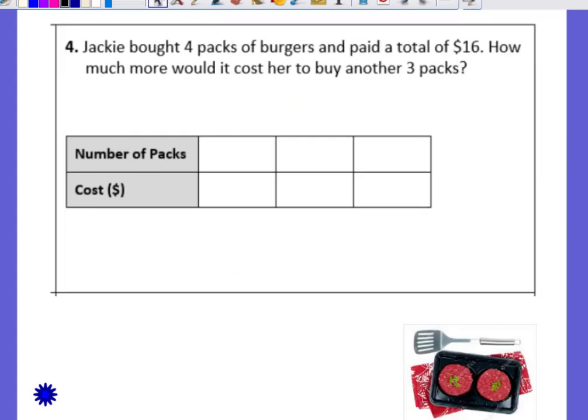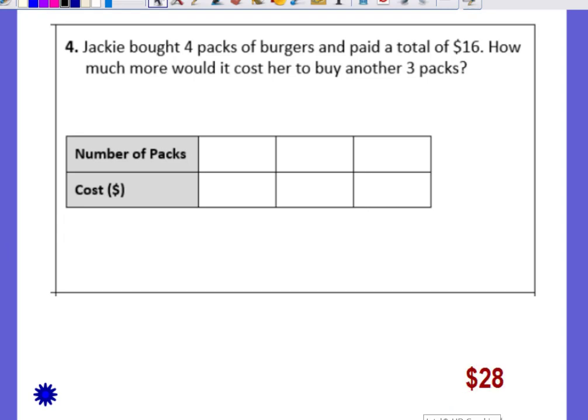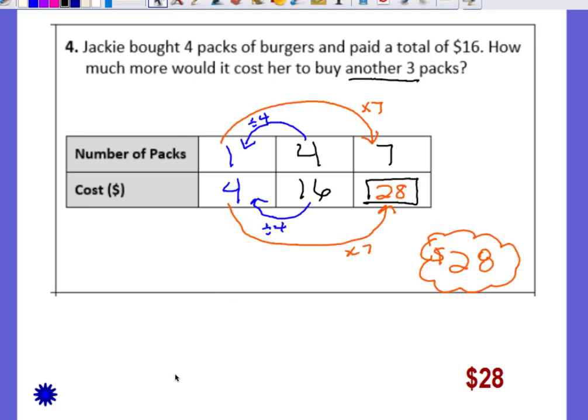Problem number four. Jackie bought four packs of burgers and paid a total of $16. How much more would it cost her to buy another three packs? Go ahead and pause your video and solve. Come back and check your answer. Okay did you get $28? If you did great job, move on to number five. If not take a look at the work shown. See if you can find your mistake. If you have any questions let your teacher know.